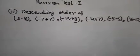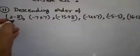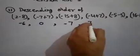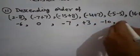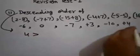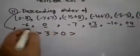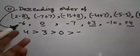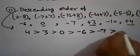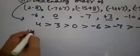Question number 11: find the descending order. Simplify each value — this is −6, this is 0, this is −7, this is +3, this is −10, and this is +4. The descending order is: 4, then 3, then 0, then −6. For negative numbers, the smaller the number the greater its position, so next is −7, then −10.